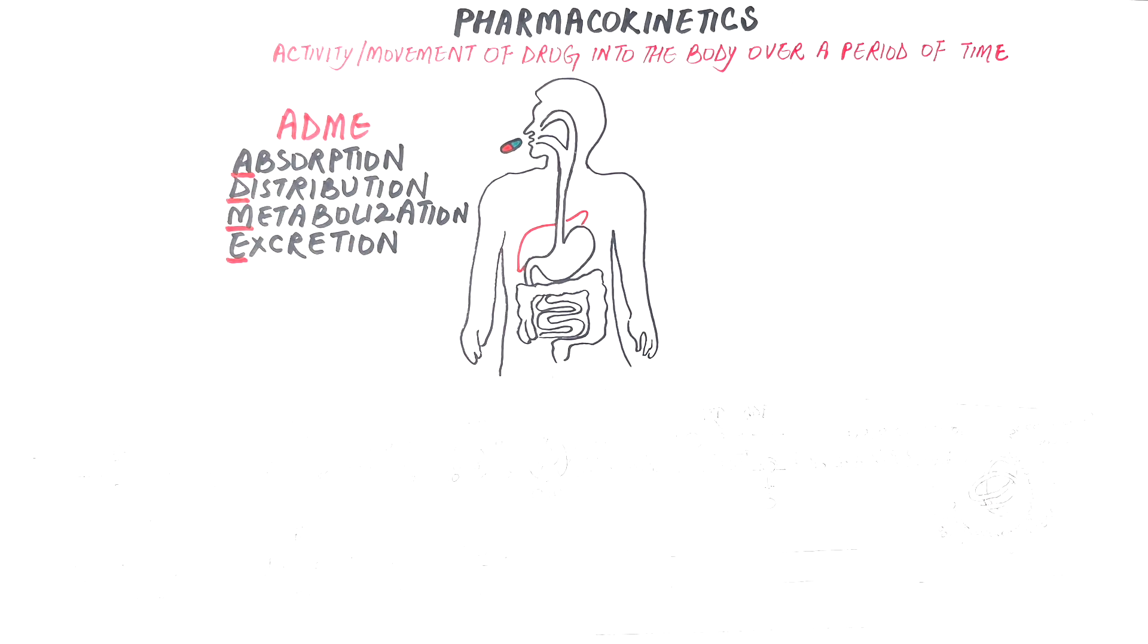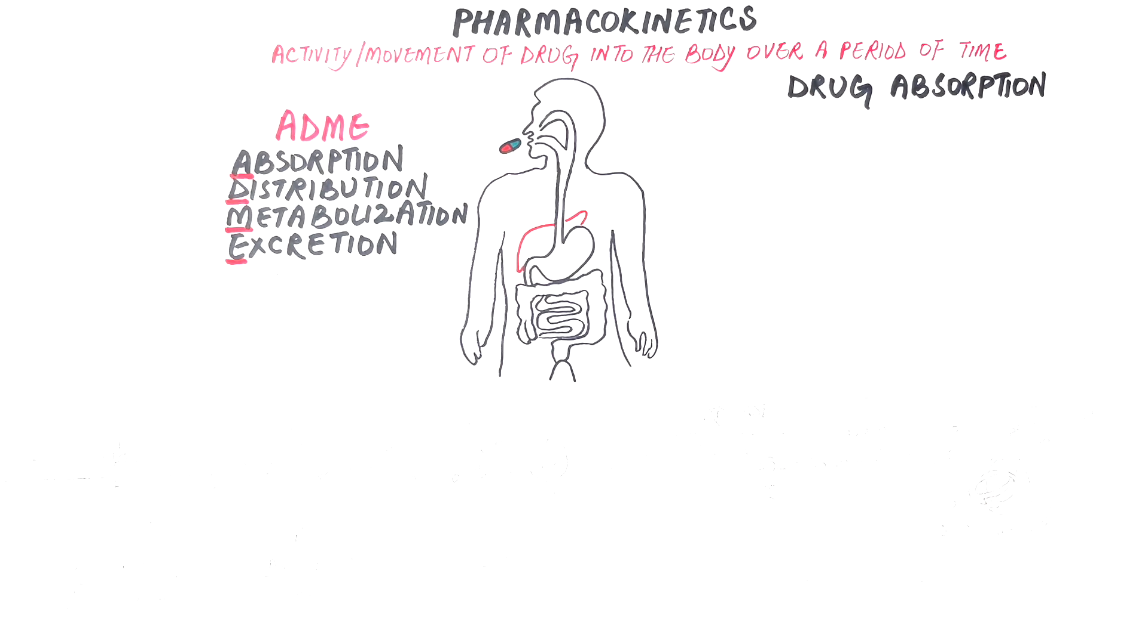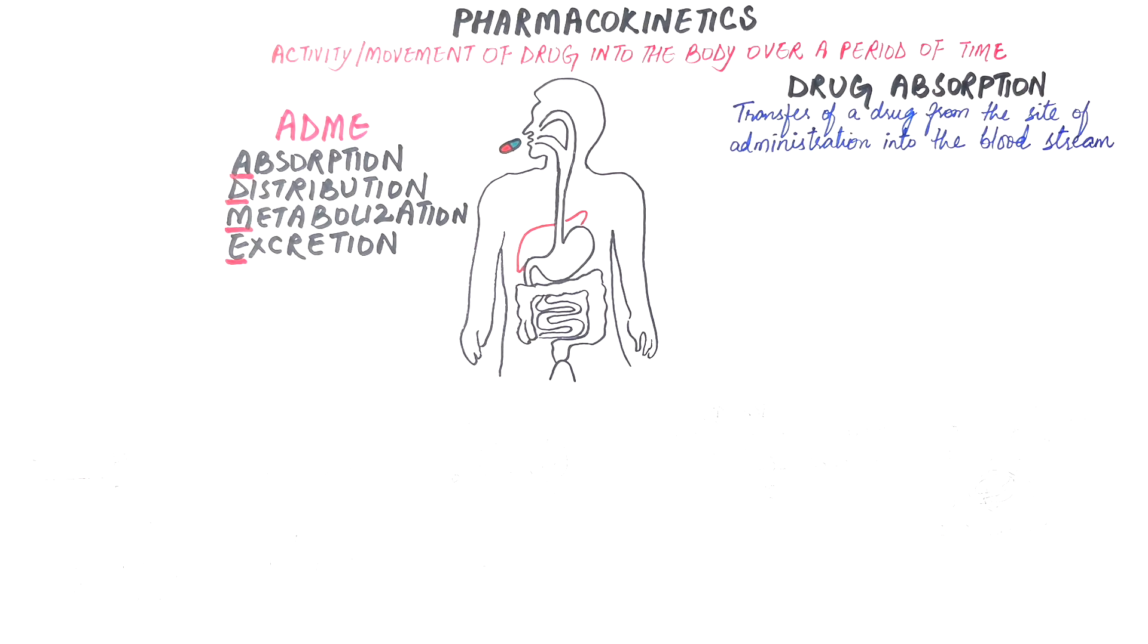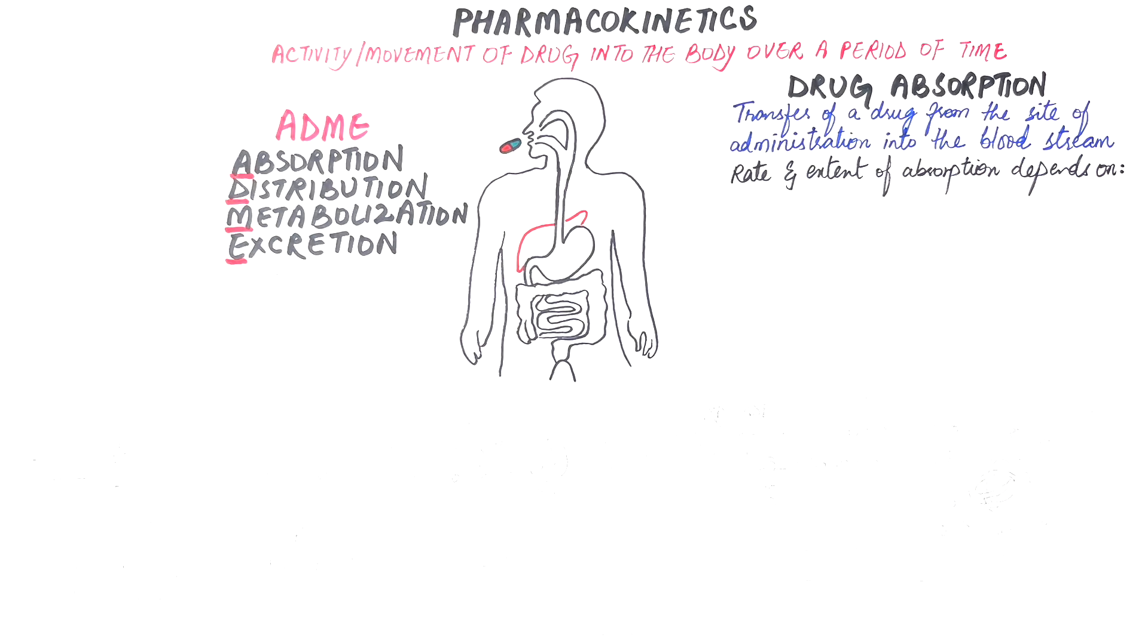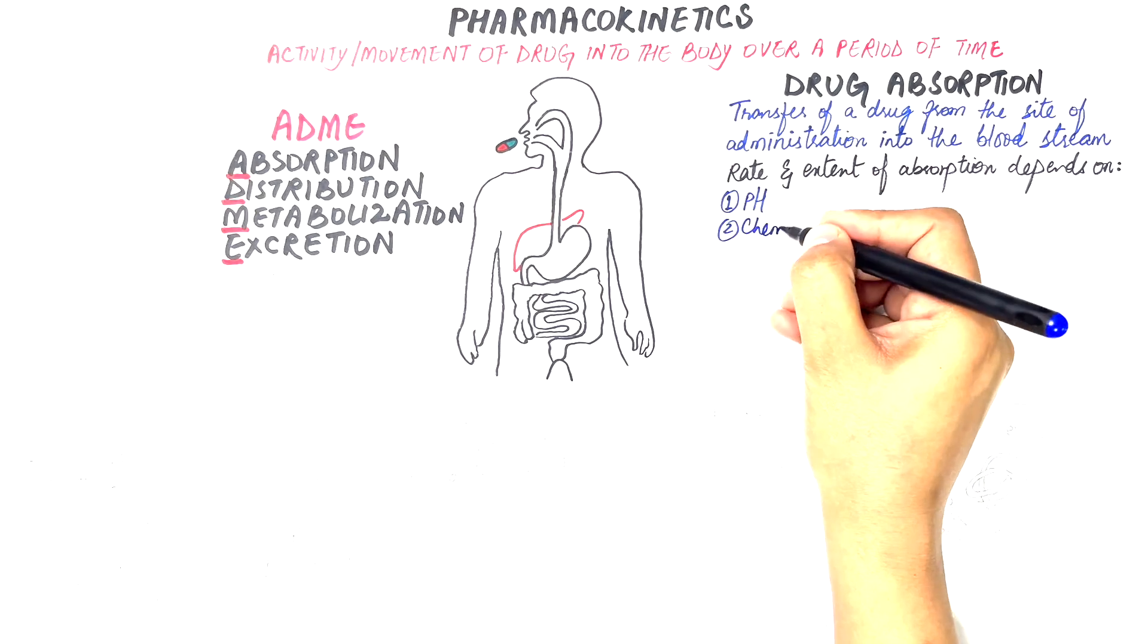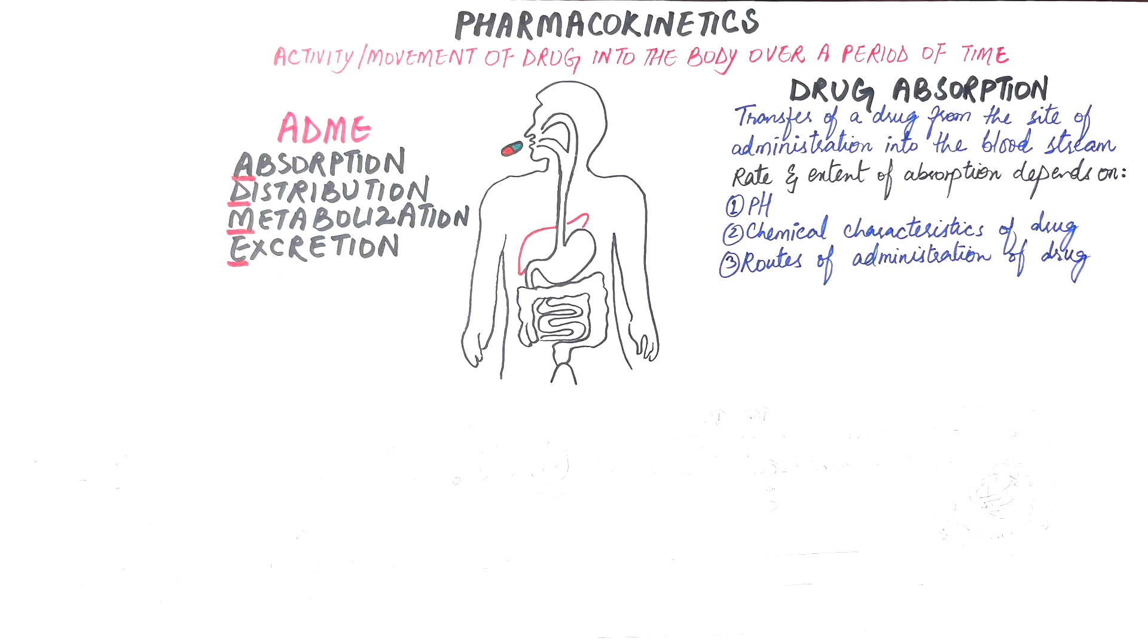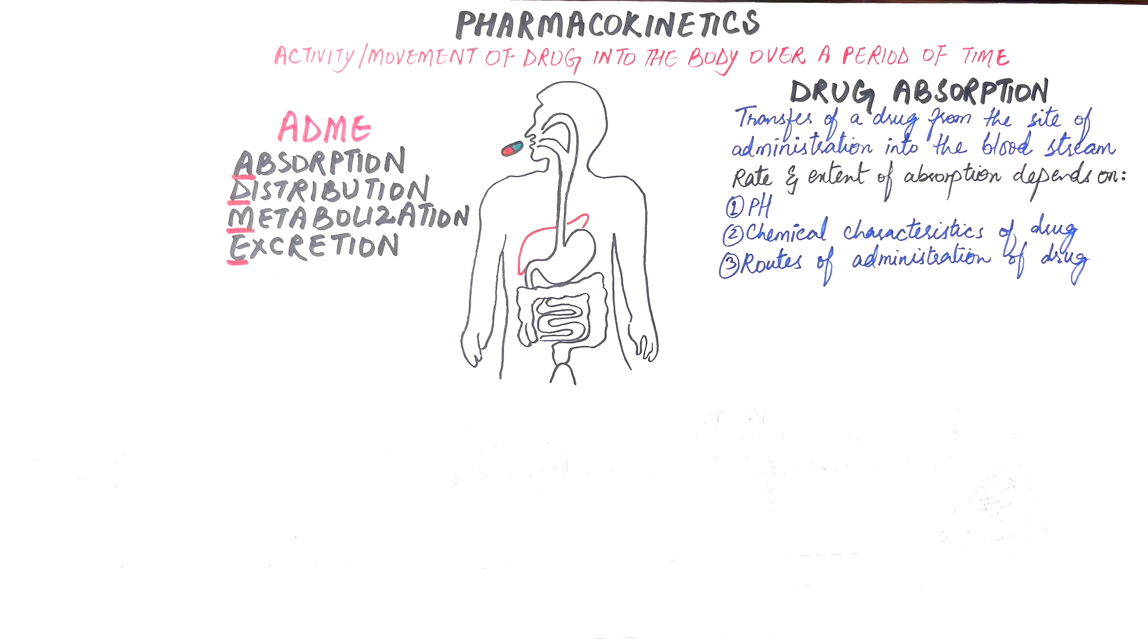Pharmacokinetics can be remembered by the mnemonic ADME. In today's video, we'll look into the drug absorption with respect to the gastrointestinal tract. Drug absorption is the transfer of a drug from the site of administration, mainly the GI tract here, into the bloodstream. The rate and extent at which drugs are absorbed depends on the medium where the drug is administered, such as the pH, the chemical characteristics of the drug itself, and then the route of administration of a drug, through which we can estimate the bioavailability of a drug as well. If you don't know what the routes of drug administration are or what the bioavailability of a drug is, you can refer to my previous video. The link for the video is given in the description box and in the right corner of the video here.